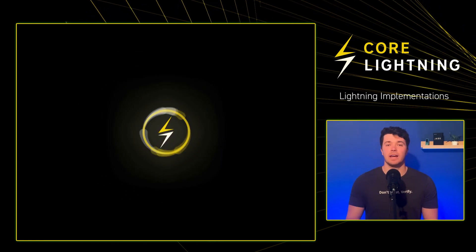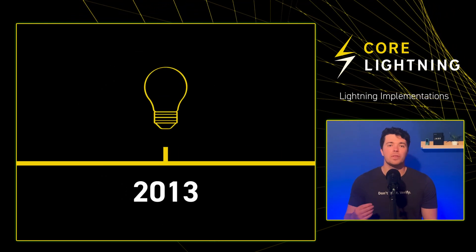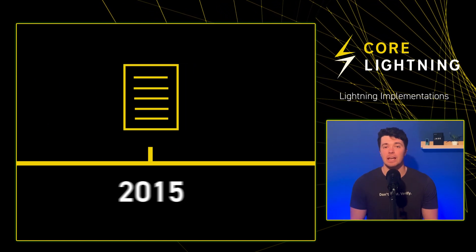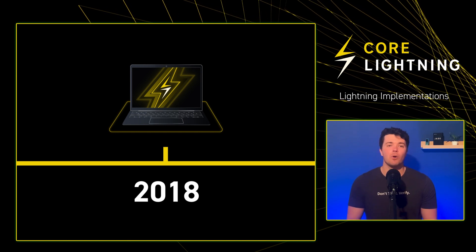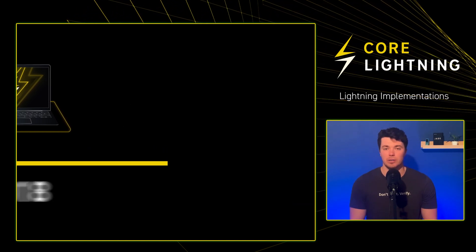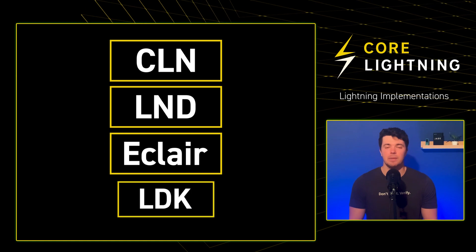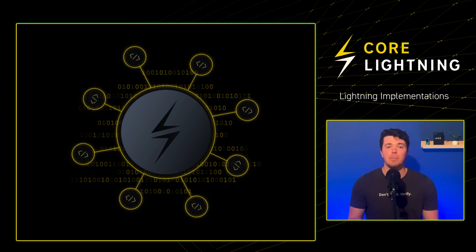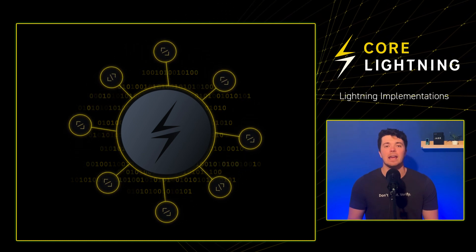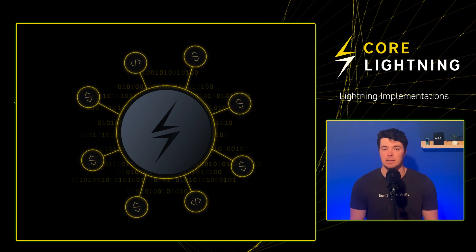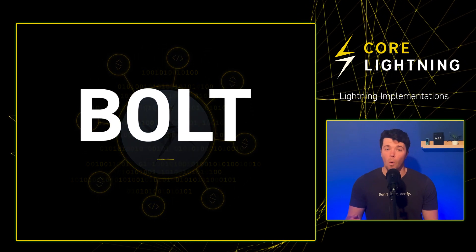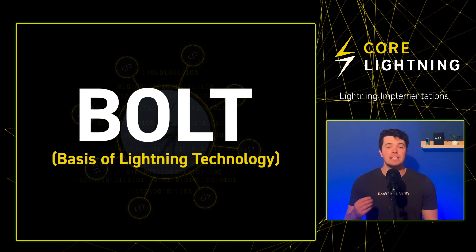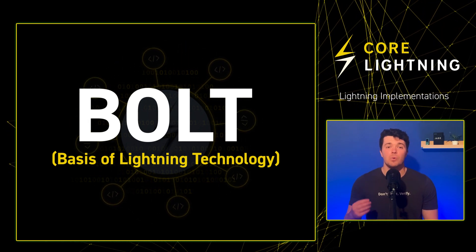The concept of the Lightning Network has been around since 2013, with the official whitepaper being released in 2015, and Mainnet launching in January of 2018. Since then, four major Lightning implementations have emerged: CLN, LND, ECLAIR, and LDK. A Lightning implementation is a software program capable of operating a Lightning node and engaging with the Lightning Network on the backend. Each implementation follows the BOLT, or the Basis of Lightning Technology specifications, ensuring compatibility and seamless interactions between nodes within the network.